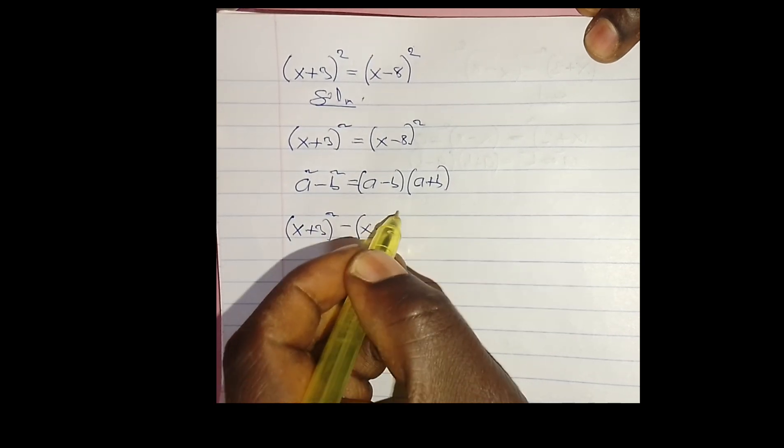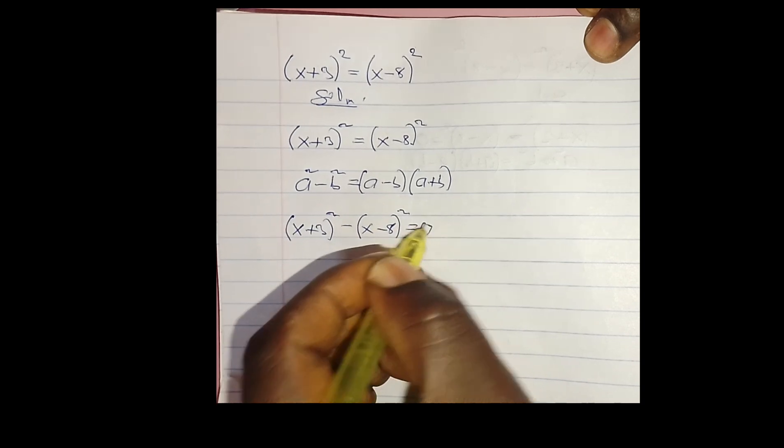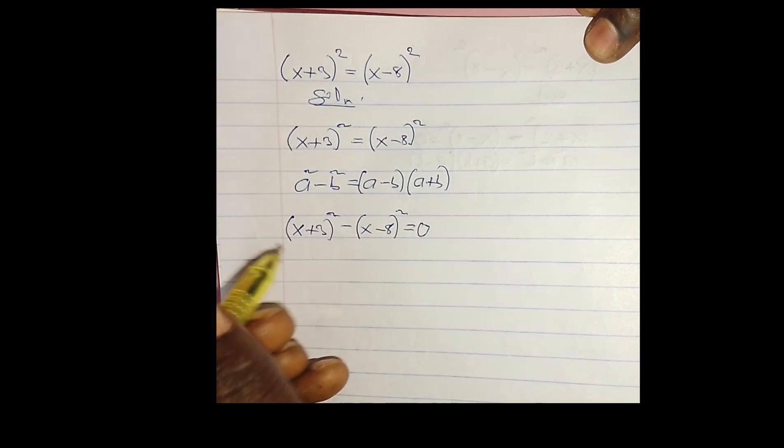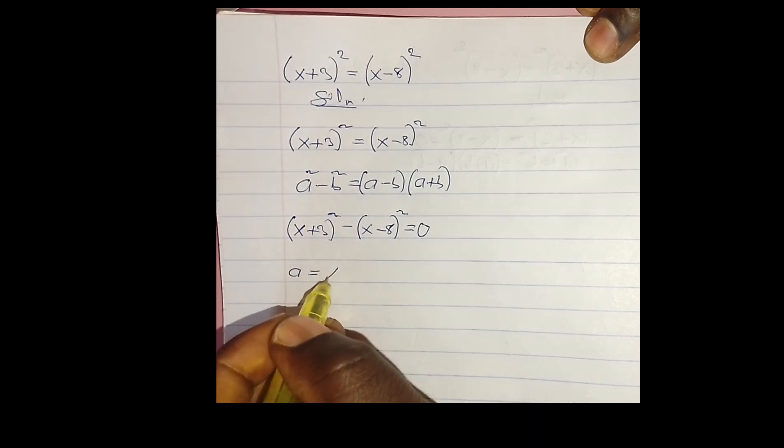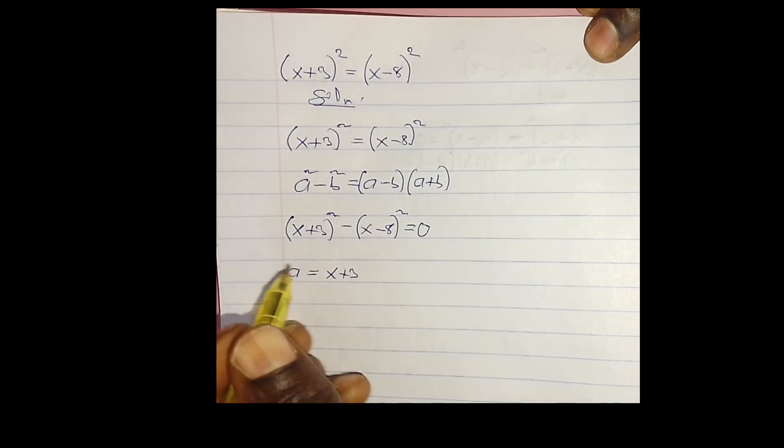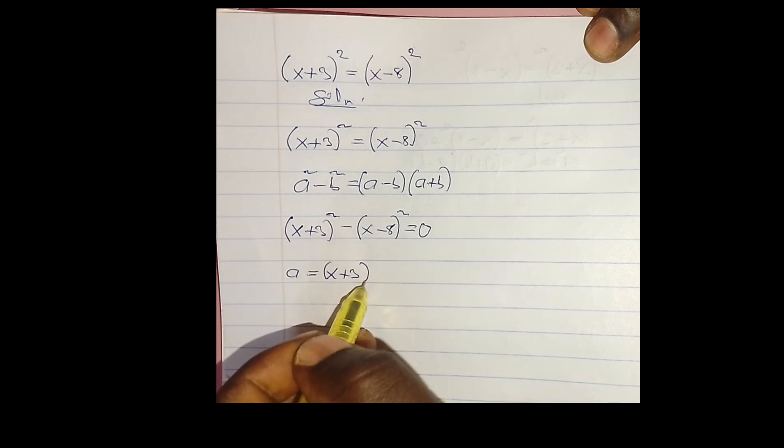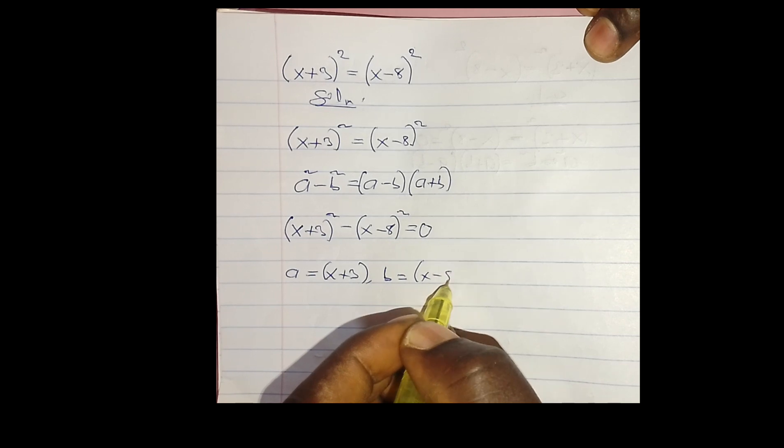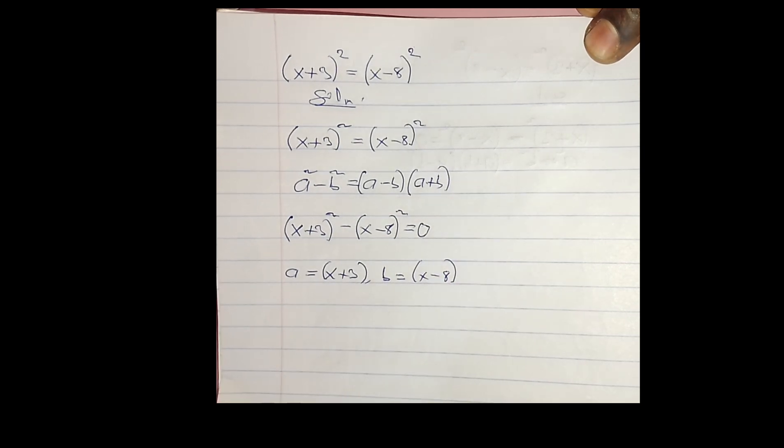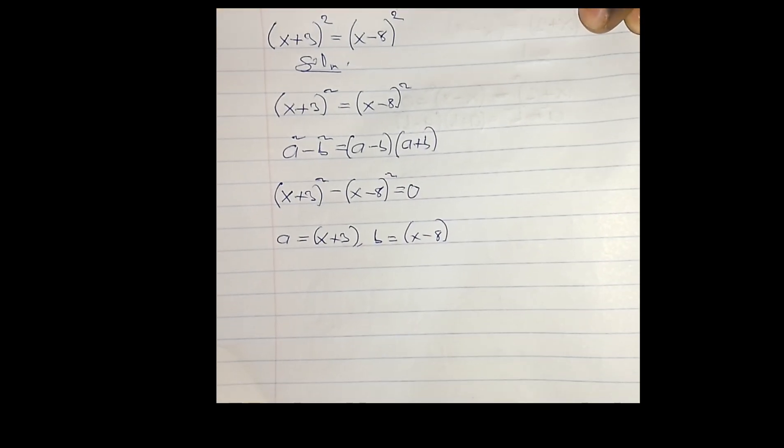So in this case our a is (x + 3) and our b is (x - 8). Okay, so if that is the case...